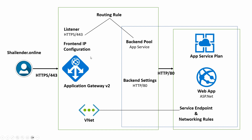Once the application gateway is ready, there will be certain integration and configuration changes that have to be done so that App Service can be integrated with Azure Application Gateway. When we deploy a virtual machine in the backend pool for Azure Application Gateway, no special changes are needed. But because App Service is a platform-as-a-service, some integration has to be done at the virtual network level. So let's go to the Azure portal and start with our deployment.